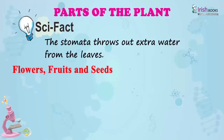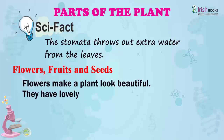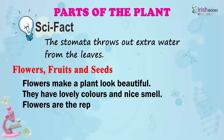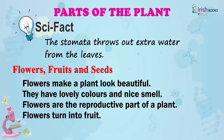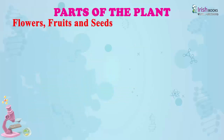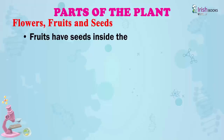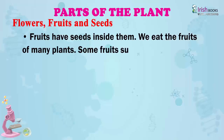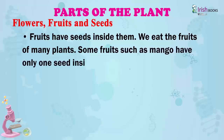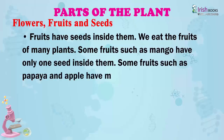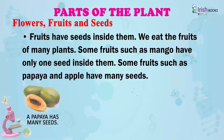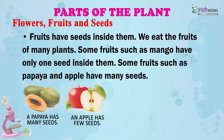Flowers, fruits and seeds. Flowers make a plant look beautiful. They have lovely colours and nice smell. Flowers are the reproductive part of a plant. Flowers turn into fruit. Fruits have seeds inside them. We eat the fruits of many plants. Some fruits such as mango have only one seed inside them. Some fruits such as papaya and apple have many seeds.